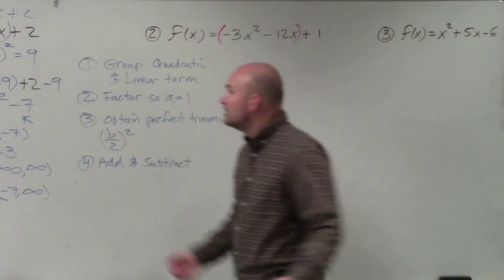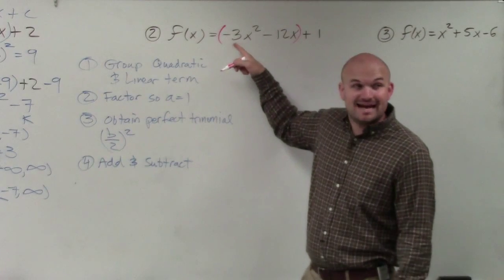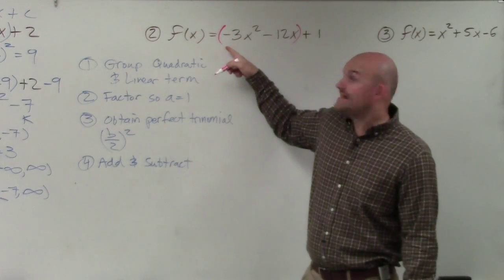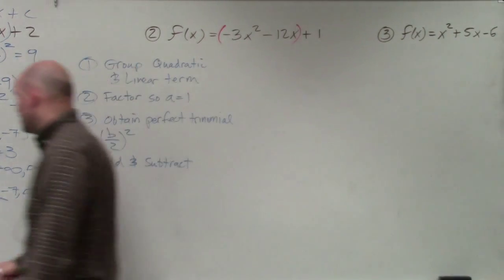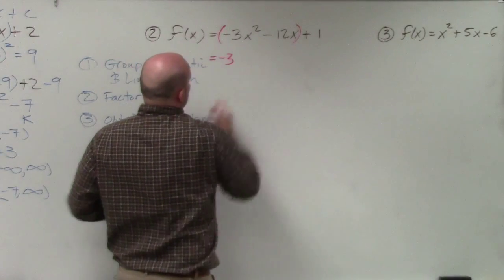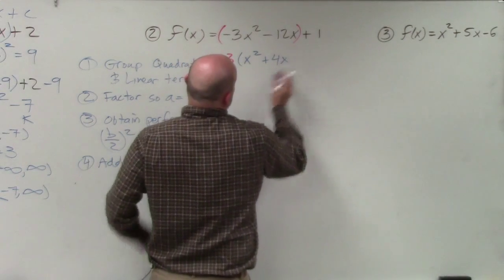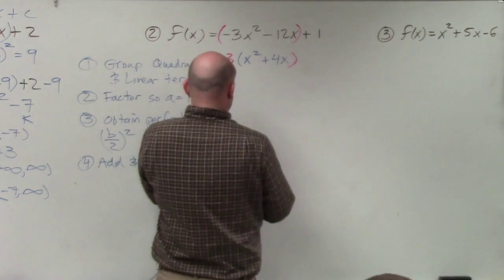Once you've grouped the first two terms, the next thing is factor so a is equal to 1. So my a is not equal to 1 in this case. My a is equal to negative 3. So I have to factor out a negative 3. When I factor out a negative 3, I'm left with x squared plus 4x plus 1.